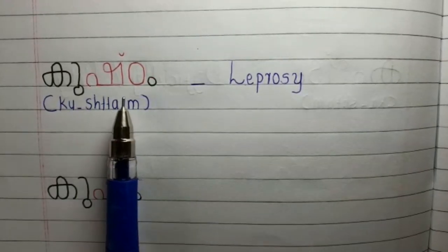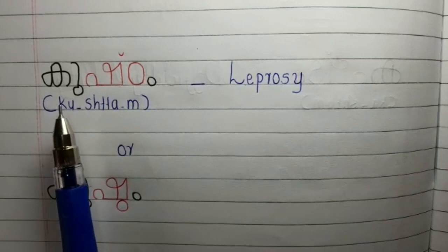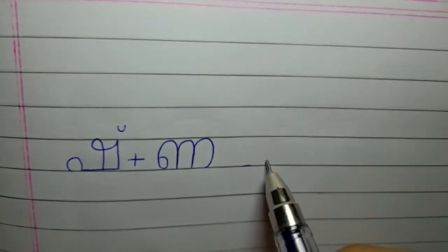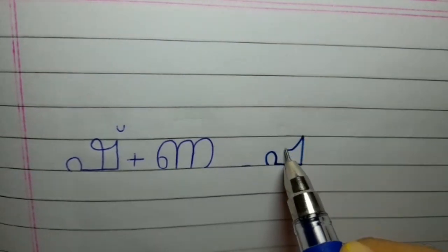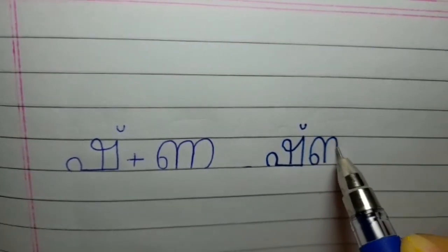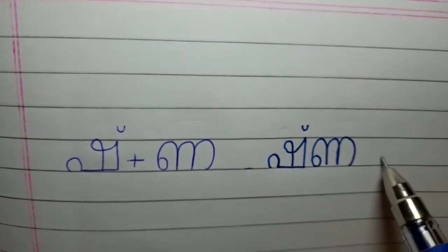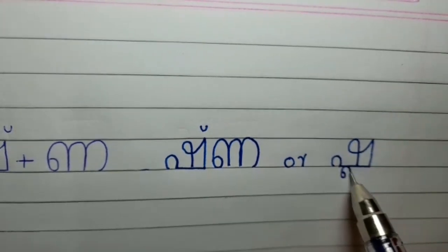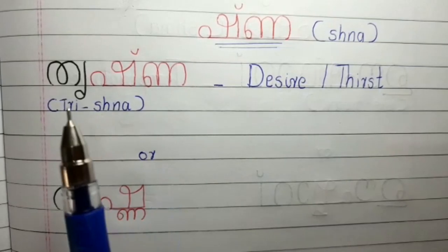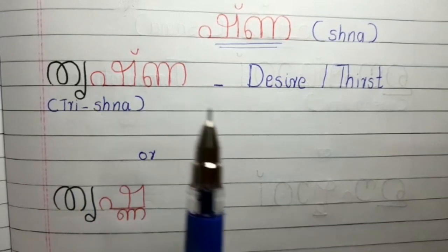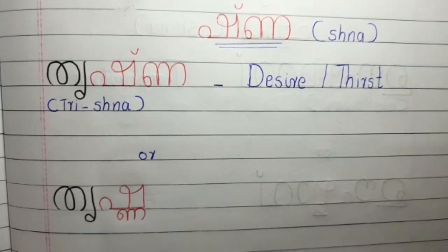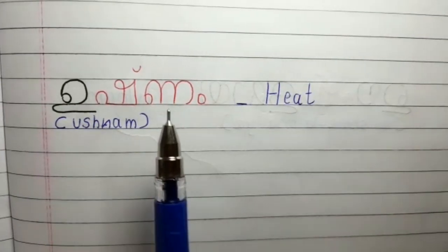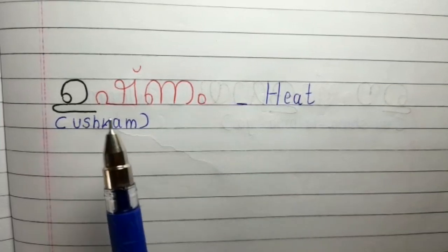Kashtam means leprosy. She plus Na, forming the compound 'Shna'. Trishna — Trishna means desire. Ushna — Ushna means heat.